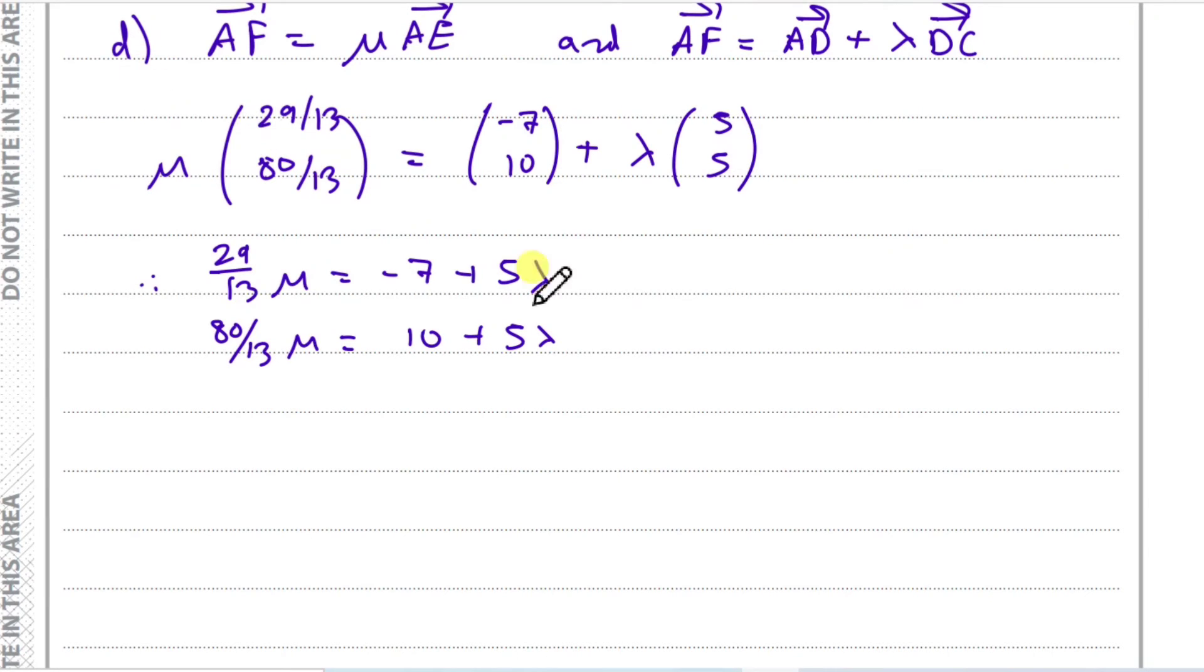And now thankfully, because we've got 5 lambdas, we can subtract these two equations. So I'm going to do bottom take away top. So if you start on the right hand side, 5 lambda take away 5 lambda is nothing. 10 take away minus 7 is actually plus 17. And then 80 thirteenths take away 29 thirteenths, I'm just putting in my calculator, should give us 51 thirteenths. And this is equal to mu. And then therefore, making mu the subject, we're just going to do 17 divided by 51 over 13. And mu should be 13 over 3.